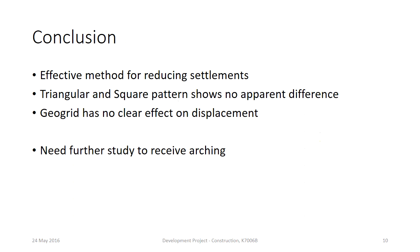Embankment piling is an effective method for reducing settlements, as shown both empirically and numerically. Triangular and square pattern designs show no difference in terminal displacement in the embankment. The numerical analysis also revealed that the use of geogrid might not be important in this type of embankment construction. However, no apparent arching of the principal stresses was computed, and as such, new analysis may be needed to confirm these results.